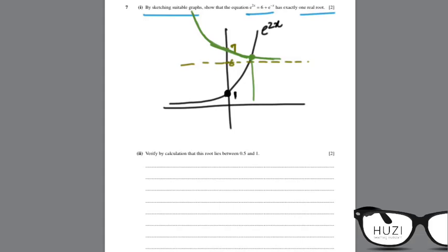Part 2. Verify by calculation that this root lies between 0.5 and 1. So, this is not exactly a perfect sketch. But, say here. e to power 2x. Let me use a different color.